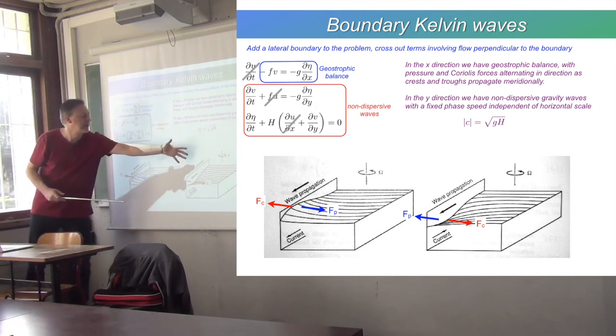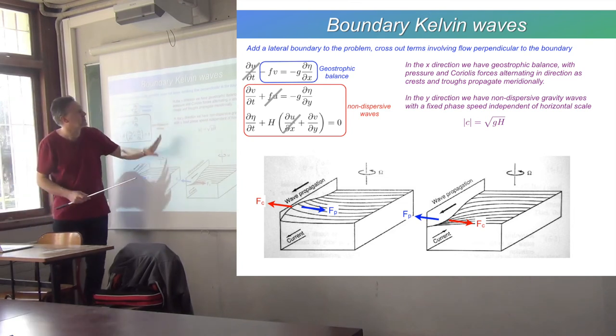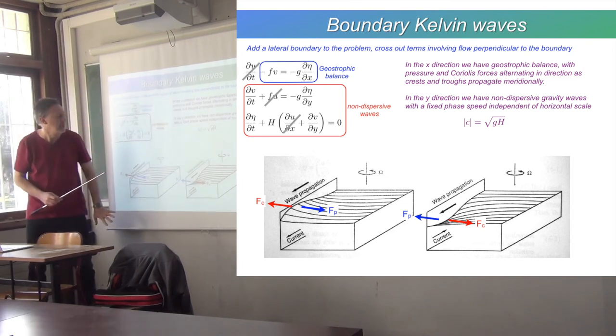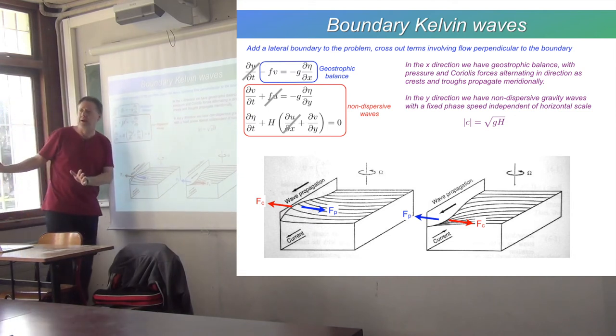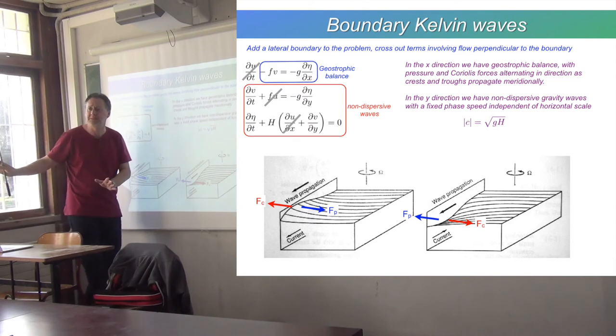And the wave propagates towards the south. This is called a Kelvin wave, and Kelvin waves in the northern hemisphere propagate with the wall on the right, or with the coast on the right.